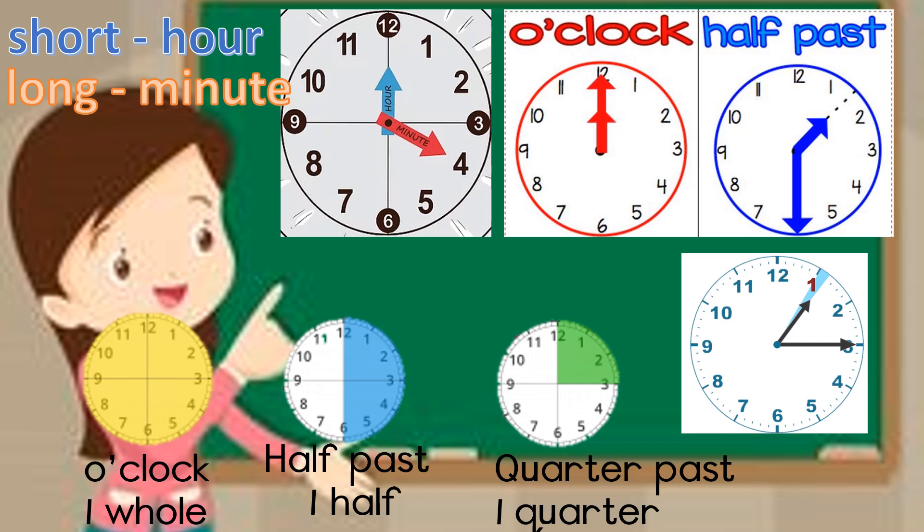Now if you look at the green clock, you will see that clock has been cut into 4 equal parts. Can you remember what we call it when something is cut into 4 equal parts? We call them quarters.